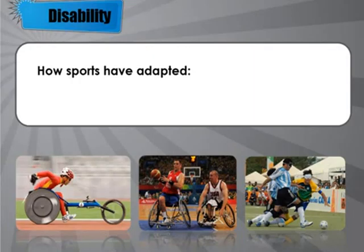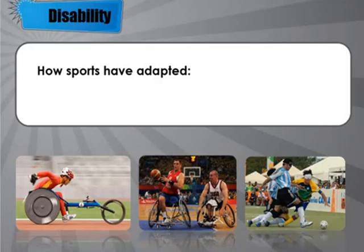There are lots of adaptations that have happened over the years. The biggest event for disabled athletes happens every four years directly after the Olympics — that's the Paralympics. The Paralympics runs in the same way as the normal Olympics: all different countries come together, normally in the same host country, and compete in track events, field events, archery, football, basketball, and so on.